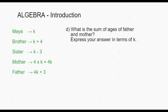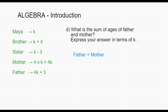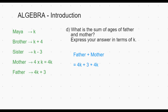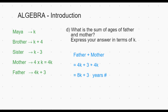Now let's look at one more example. What is the sum of ages of father and mother? Express your answer in terms of K. Father is 4K plus 3 and mother is 4K. So that's a total of 4K plus 4K is 8K, plus 3 years. The algebraic expression is 8K plus 3. A common mistake would be to add up 8K and 3 as 11K or just as 11, which would be incorrect. The answer is 8K plus 3.